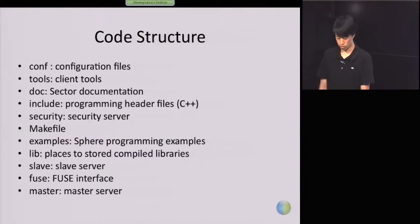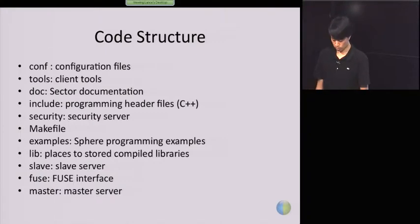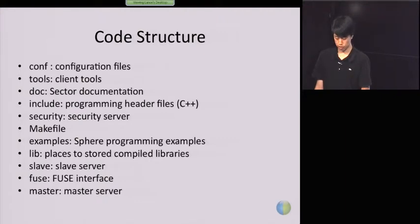After you download the code, this is the source code inside the directory. This is the configuration — you need to do a little bit of configuration. This tool lets you access the sector file system and run simple data processing jobs. You can find the sector documentation in this directory. Right now the programming header files are only C++. Java and Python ports are still being worked on. There's the secure server makefile, programming examples, libraries you need to link your application, the slave node, FUSE — I'll explain FUSE later — and the master server.